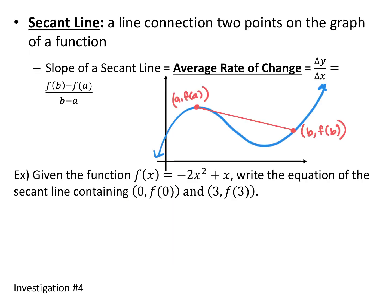A secant line is a line that connects two points on a graph, very similar to a chord or secant line in a circle. If you have two separate points on the graph and draw a line between them, that's a secant line. We can only find slopes of lines, but we can estimate the slopes of curves using secant lines — this is called the average rate of change.